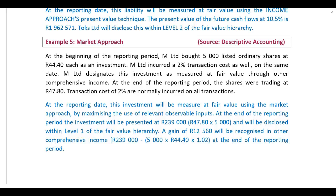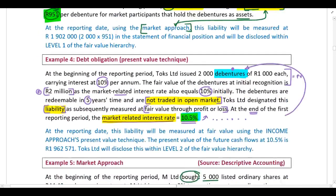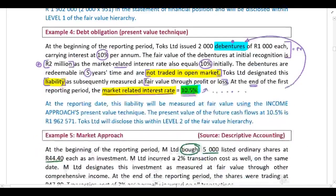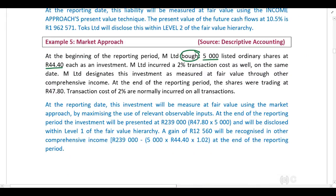At the beginning of the reporting period, M Limited bought 5,000 listed Audrey shares at 44.40 each. In this scenario they buy — in the previous scenario we looked at liabilities. They bought 5,000 listed shares. The fact that they are listed immediately tells you this will be a market approach. M Limited incurred 2% transaction costs as well on the same date. We need to identify whether those transaction costs should be included or excluded.